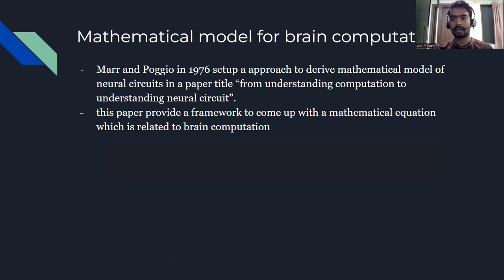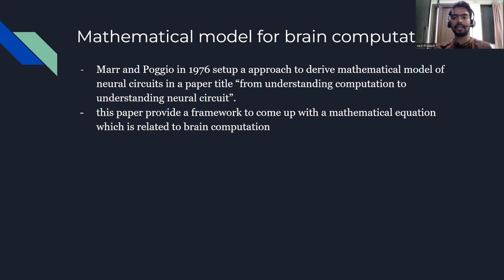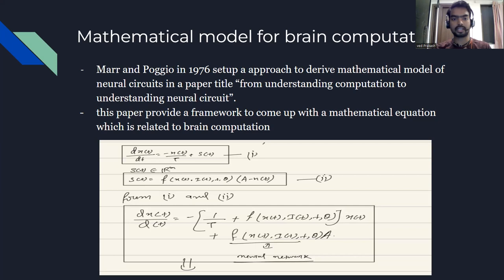For deriving these mathematical equations, they went back to prior work. Marr and Poggio in 1976 already set up an approach to derive a mathematical model of neural circuits in a paper titled 'From Understanding Computation to Understanding Neural Circuits.' They set up a framework to come up with a mathematical equation related to the brain — specifically the computation of a macroscopic brain. From that paper, they came up with an equation that looks like this.